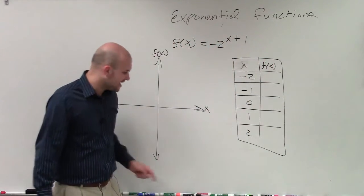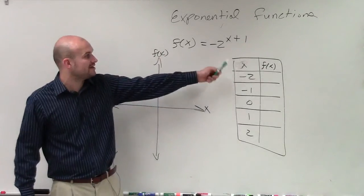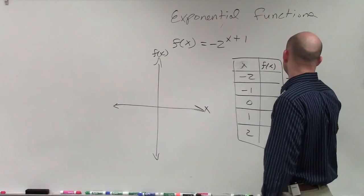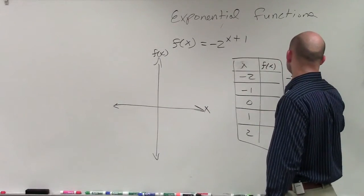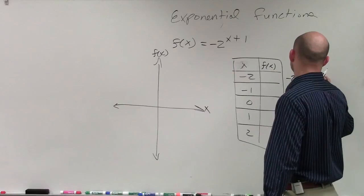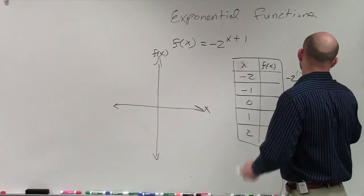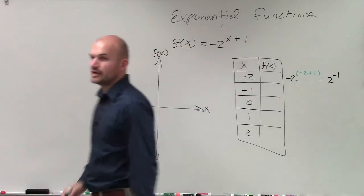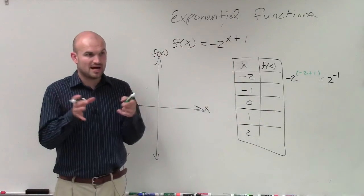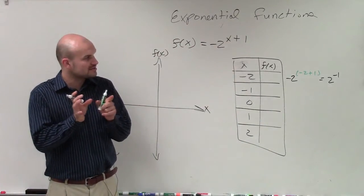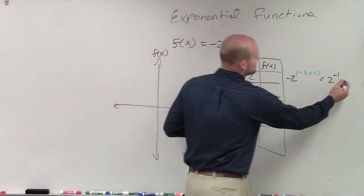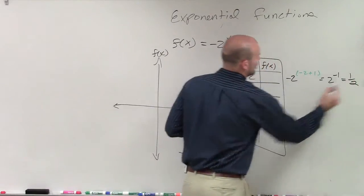So now to determine f of x, all you simply do is you take your x values and you plug them in for x. So here I have negative 2 raised to the negative 2 plus 1, equals 2 to the negative first power. Order of operations, you apply inside those parentheses first. So negative 2 plus 1 is negative 1, 2 to the negative first power is just going to equal 1 half.